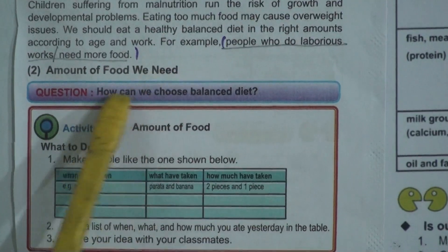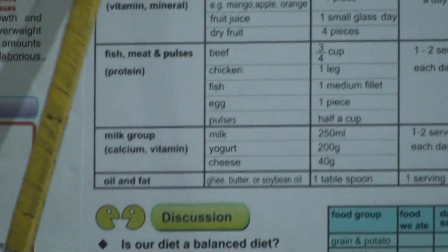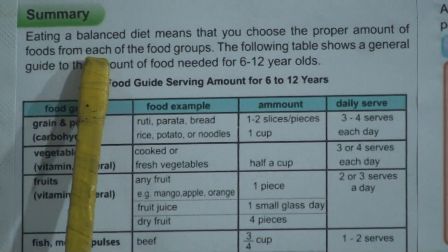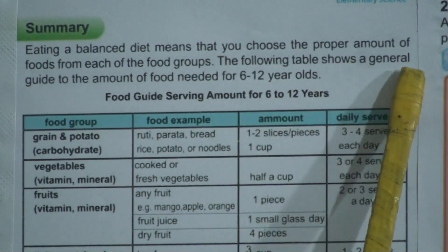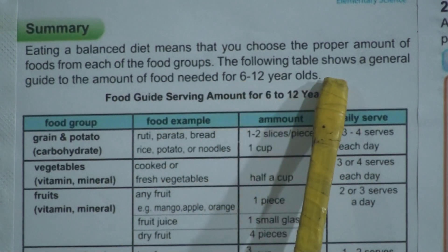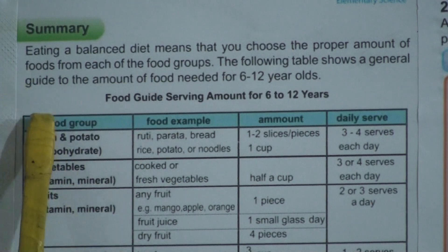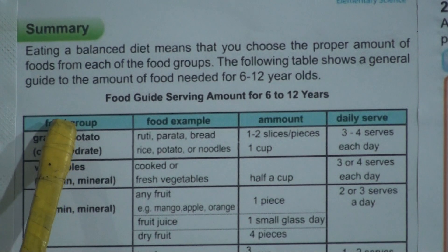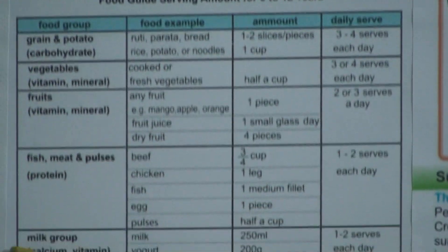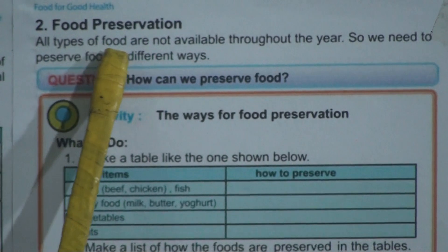The question is: how can we choose the balanced diet? Eating a balanced diet means that you choose the proper amount of food from each of the food groups. The following table shows a general guide to the amount of food needed for 6 to 12 year olds. This food guide shows the serving amounts, and you have to learn this table.